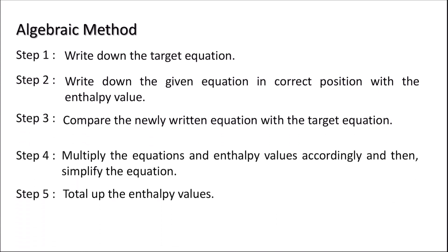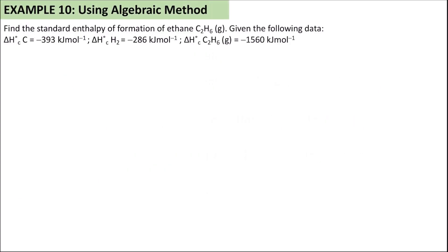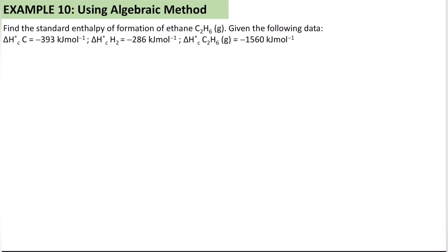Let's go through the steps one by one using Example 10. The first thing I will do — cara lebih mudah kita akan gunakan satu example — I will write down the target equation. Step 1: write the target equation. It is very important for you to know how to write the thermochemical equation. Our target equation is the standard enthalpy of formation of ethane.